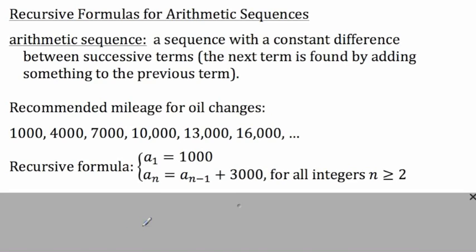In the past, we've studied recursive formulas, and this is what the recursive formula for this arithmetic sequence would look like. Recursive formulas require two different parts. First, you must define the first term. Remember that A is the name of the sequence, and the subscript tells you which term we're on. This tells us that the first term in the sequence A is 1,000, which is confirmed right here — that first number in the sequence is 1,000.